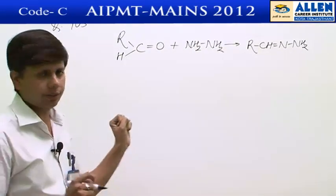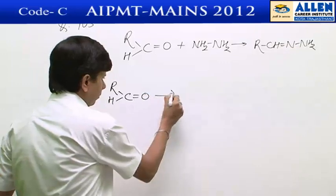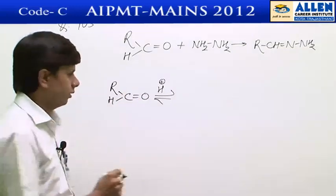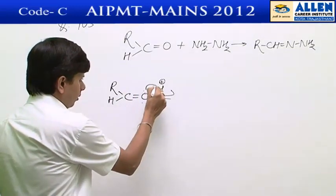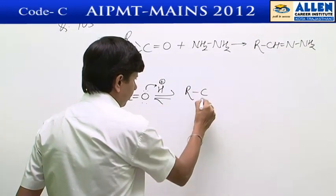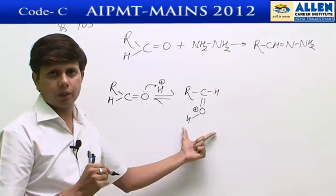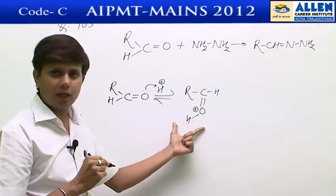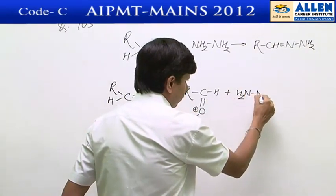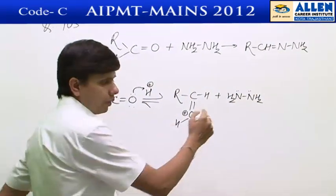What is the mechanism of the reaction? The reaction is carried out in acidic medium, in which first of all protonation of the carbonyl compound takes place to give the protonated carbonyl compound. After protonation, hydrazine attacks as a nucleophile on the protonated carbonyl compound.